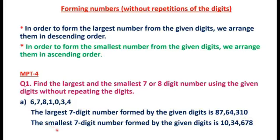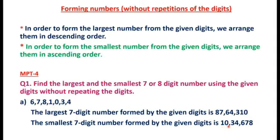For the smallest seven-digit number, we arrange in ascending order. Now, zero is the smallest digit, but if zero is written at the left-hand side, the number will become only six digits. That's why we write 1 first, then 0, then arrange the remaining digits in ascending order. The smallest seven-digit number becomes ten lakh thirty-four thousand six hundred seventy-eight.